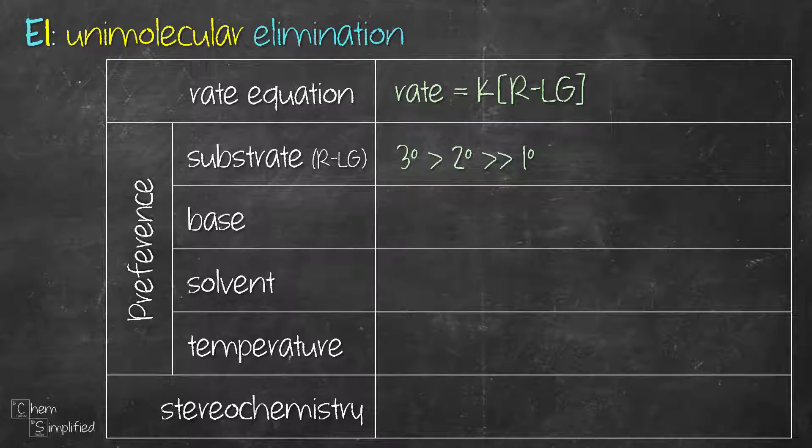As for the bases, strong bases will favor E2 mechanism. So E1 mechanism will only require weak bases like water, alcohol, iodide, cyanide, and thiolates.